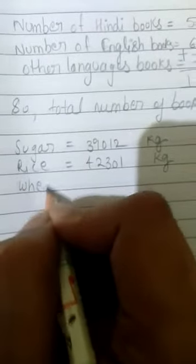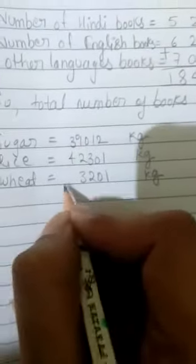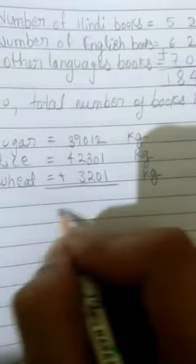And wheat, how much? Wheat is 3,201 kg. Okay? Now what do we do? Add. Okay?